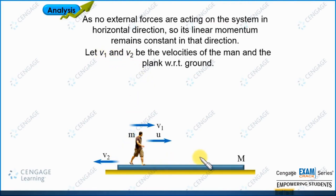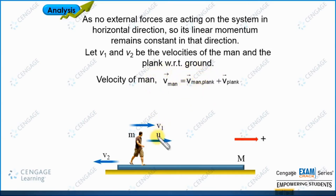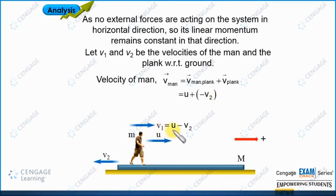We can find the velocity of the man with respect to ground since we are given velocity U with respect to the plank. We write: velocity of man with respect to ground equals velocity of man with respect to plank plus velocity of the plank. Taking rightward as positive, U is positive and v2 (leftward) is negative. Therefore, v1 equals u minus v2.